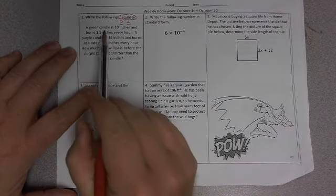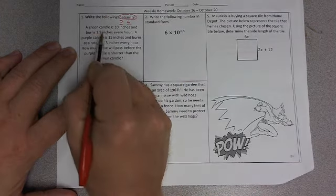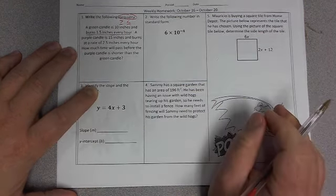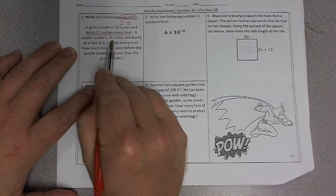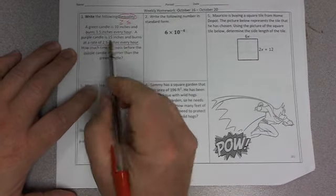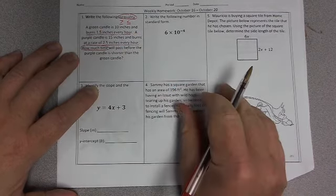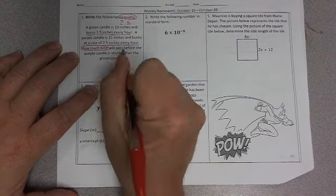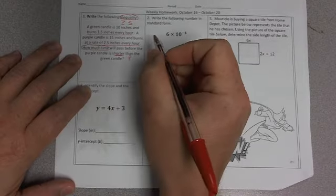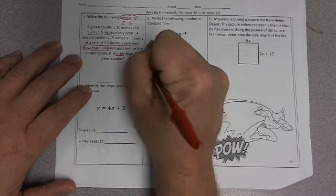So let's read the problem. A green candle is 10 inches and burns at 1.5 inches every hour. A purple candle is 15 inches and burns at a rate of 2.5 inches every hour. How much time will pass before the purple candle is shorter? Those are inequality words, shorter. The purple candle is shorter than or less than, we can think of shorter as less than, the green candle.